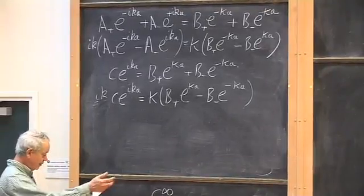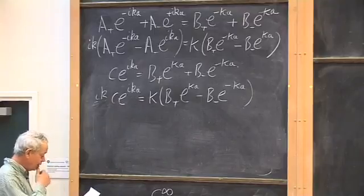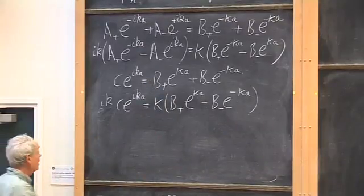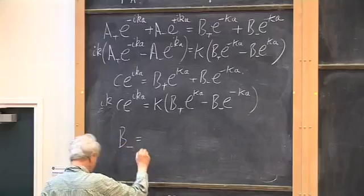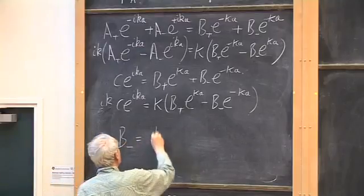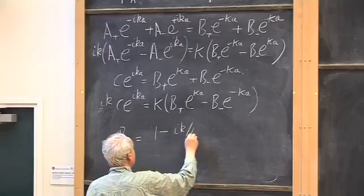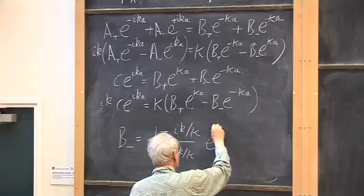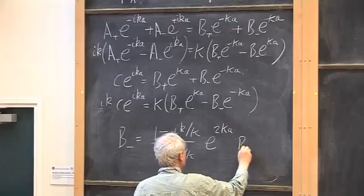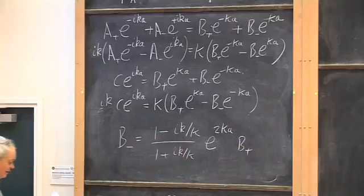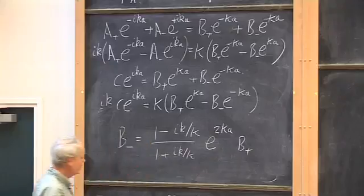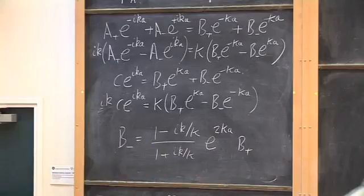When you carry out the elimination between the right-boundary equations, you find that B₋ = [(1 − iK/k)/(1 + iK/k)] e^(2Ka) · B₊. Note there is a typo in equation 5.40 in the book — the factor e^(2Ka) was dropped in typesetting.